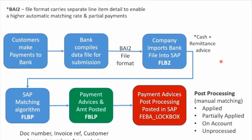Summarizing the process — whether a regular bank statement or specifically lockbox — customers are making payments to your bank, and the bank itself is then compiling a data file to submit to your company. The main format being used today is the BAI2 file format. There used to be a BAI1, but BAI2 carries separate line item detail to enable a higher automated matching rate, and partial payments can also be applied.